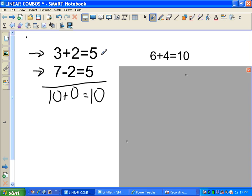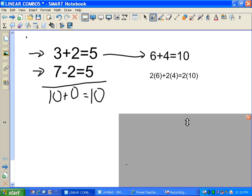6 plus 4 is equal to 10. A very similar equation to 3 plus 2 is equal to 5. The difference is, oops, well, it is very similar, but that's not the direction I was going. If I multiply 2 times 6 and 2 times 4, I get 2 times 10. 2 times 6 is 12. 2 times 4 is 8. 2 times 10 is 20.